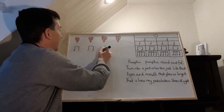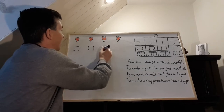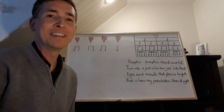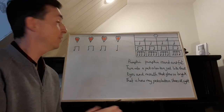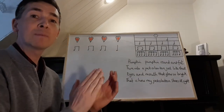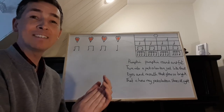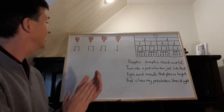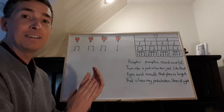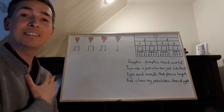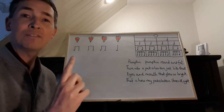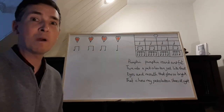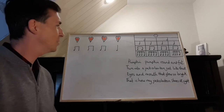We need a pair of notes that fit with pumpkin, pumpkin, round and — and then fat on its own. Have you worked it out? Pumpkin, pumpkin, round and fat should match ti-ti ti-ti ti-ti ta. Ti-ti ti-ti ti-ti ta — we've definitely got the four heartbeats and the notes match the words as well. Let's have a look at line two.